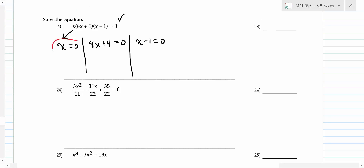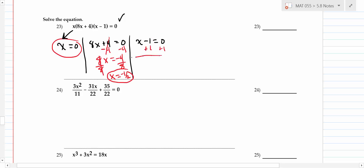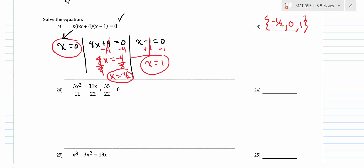The next problem has fractions. Don't try to factor with fractions — that's too hard. Since it's an equation with fractions, get rid of the fractions. The denominators are 11 and 22; the common denominator is 22. Multiply both sides by 22. That gives: (22/11)·3x² = 6x², minus (22/22)·31x = 31x, plus (22/22)·35 = 35. So the equation becomes 6x² - 31x + 35 = 0.